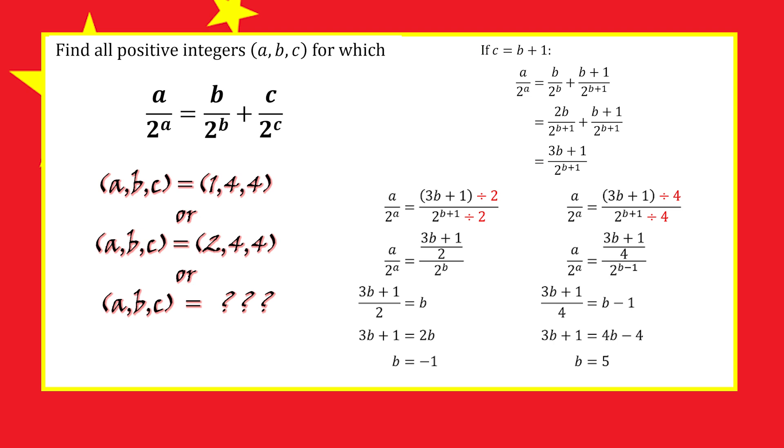We get 3b plus 1 over 4 equals b minus 1, which gives b equals 5. Since c was b plus 1, we have c equals 6, and a equals 4, giving us the solution (4,5,6).